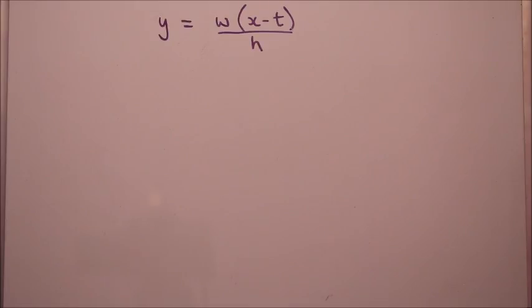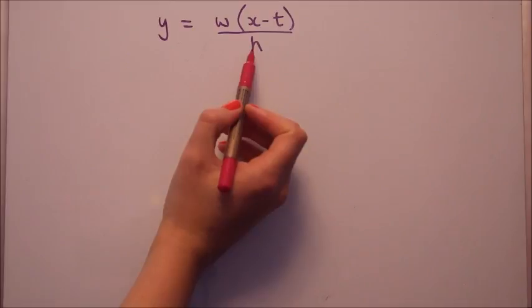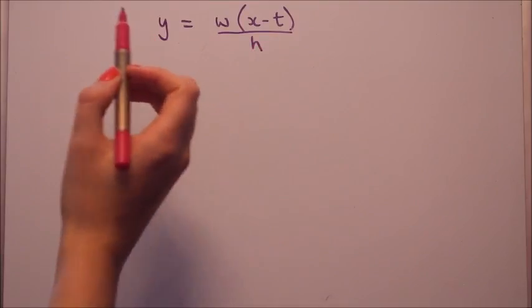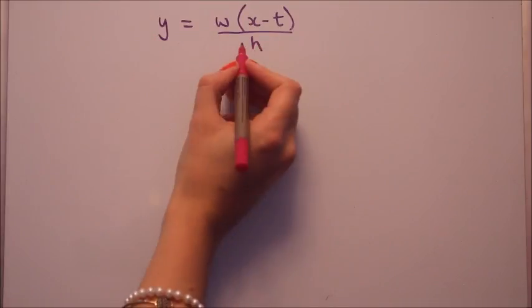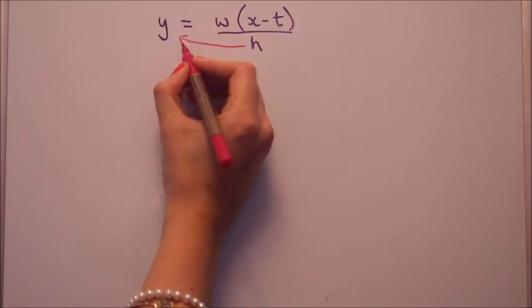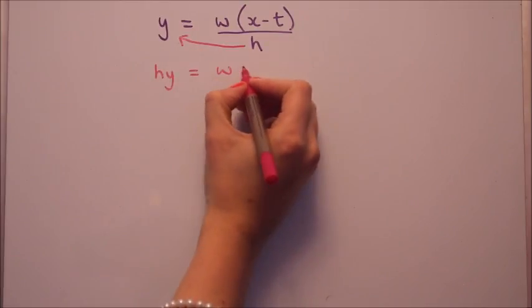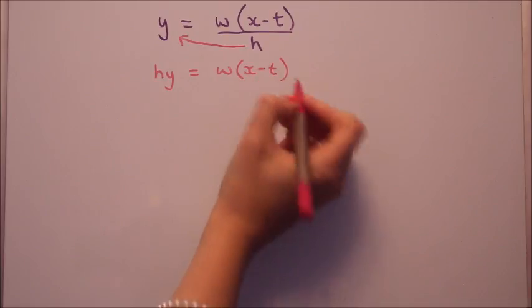So this first example, I want to make X the subject, so please do pause and have a go. The first thing I want to do is get rid of the H, that's the denominator, I don't like fractions. Now because we're dividing by H, we're going to do the opposite. So we're going to bring it onto this side by multiplying by H. So that H is going to come up to this side here, so we'll have H times Y. On this side we'll just be left with W times X minus T.